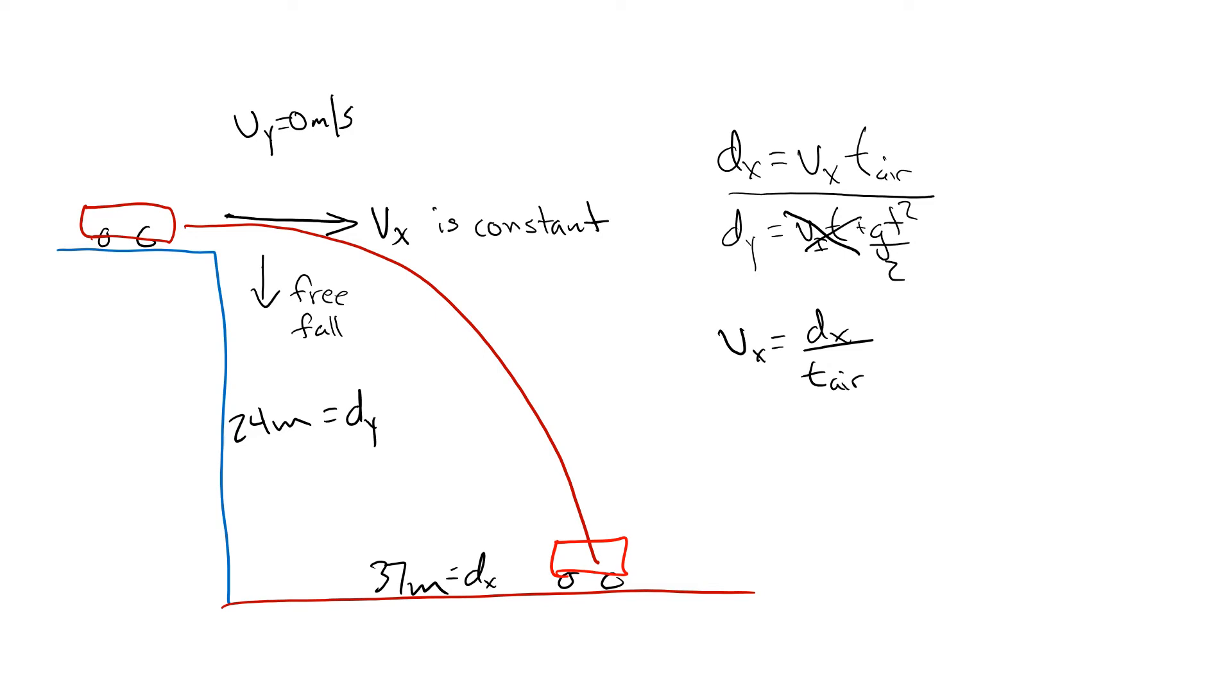We do know d_x, as we can see over here that's 37 meters, but we don't know the time in the air so we need to find a way that we can solve for that. The nice thing is we can transition to the y-axis to solve for that because time is going to be the same for both sides.